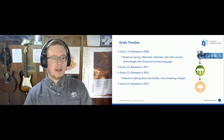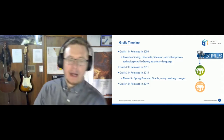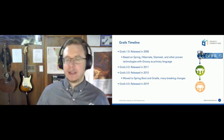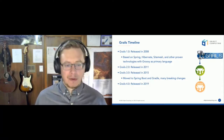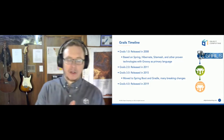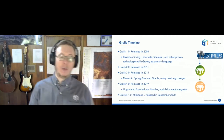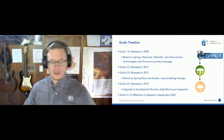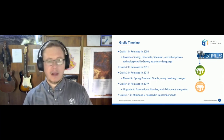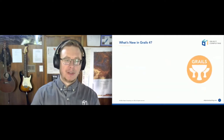The Grails 2 to 3 migration was very painful for a lot of people simply because it was a complete re-architecture based on Spring Boot. That had a lot of benefits and allowed Grails 3 and up to take advantage of Spring Boot features, but it was a painful process. Grails 4 was released in 2019 — just last year — and new releases are still being made. Grails 4.1's second milestone was just released a week ago, with a move to Groovy 3 in the works.